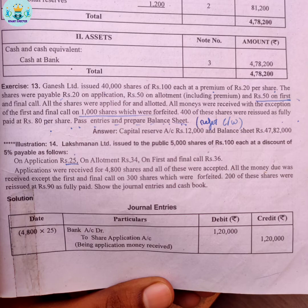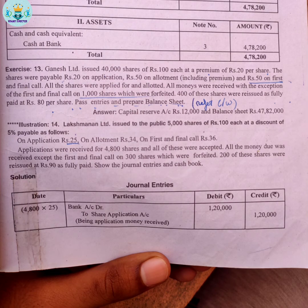For the share issue at a discount, the total share value comes to Rs.100, but because of the 5% discount the company receives less. On application Rs.25, on allotment Rs.34, on first and final call Rs.36 — together these add up to Rs.95 per share, reflecting the discount. Applications received were for 4800 shares, not 5000, so only 4800 shares were allotted.